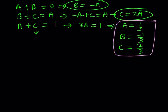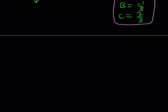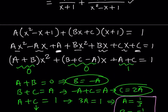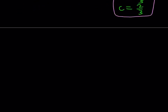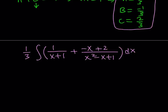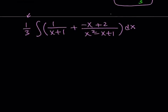Using those values, we separate this into two fractions. We can pull out one third on the outside, giving us one third times the integral of 1 over x plus 1 plus negative x plus 2 over x squared minus x plus 1, all times dx. Notice our b value is negative 1, that's why I wrote negative x; and c was two thirds but since I took out one third, I can just replace that with 2.